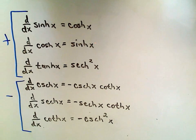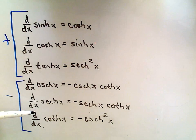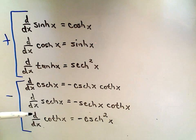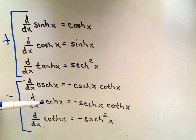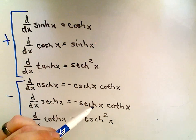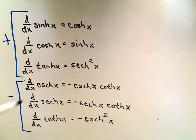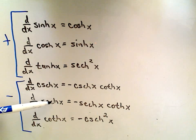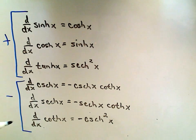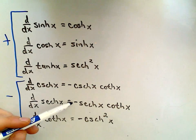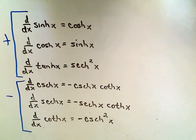Other than that, notice that the formulas are really exactly the same as the original trig functions. The derivative of secant x is secant x tangent x. Well, here you just have to remember to insert the h's for the hyperbolic part, but you also have to remember this negative sign.